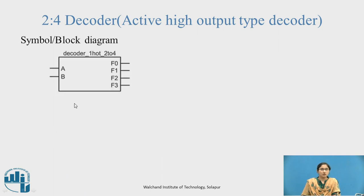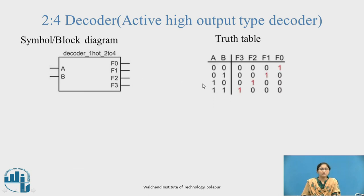This is the symbol or block diagram of a 2-to-4 decoder. A and B are the two inputs; F0, F1, F2, and F3 are the outputs. It is a one-hot decoder because the output is active high according to the input given. From the truth table: when input code is 00, F0 is active high; when 01, F1 is active high; when 10 (decimal 2), F2 is active high; when 11 (decimal 3), F3 is active high.